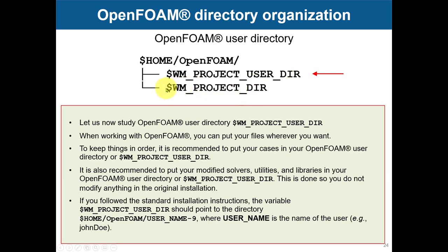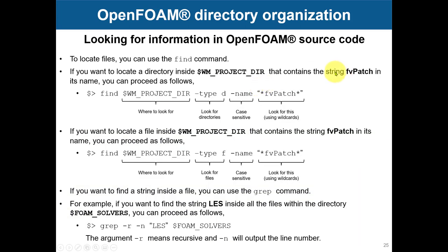Very important takeaway: do not modify whatever you have in the main installation unless you know what you are doing. Since you have the source code, it's important to know how to search for information. As I showed in the bash/shell video, the find command lets you look for files or directories — very useful in OpenFOAM. The grep command lets you search for a string of text within files or directories.